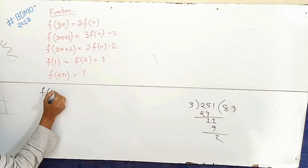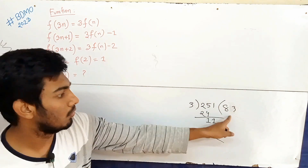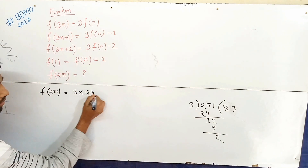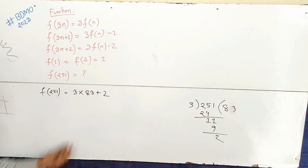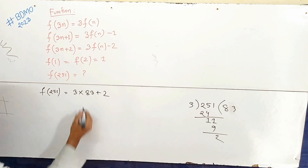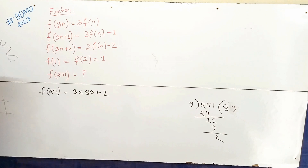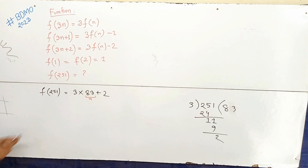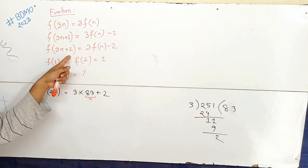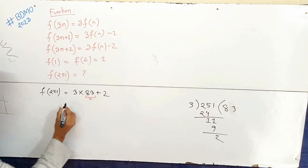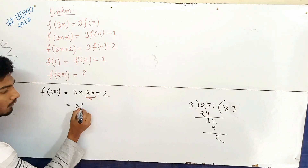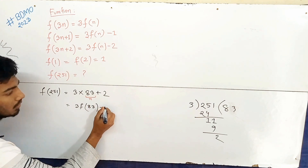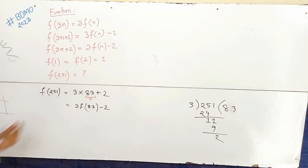Now, what do we have to do with f(251)? We write 251 = 3(83) + 2. So, applying the rule f(3n+2) = 3f(n) - 2, we get f(251) = 3f(83) - 2, where n is 83.